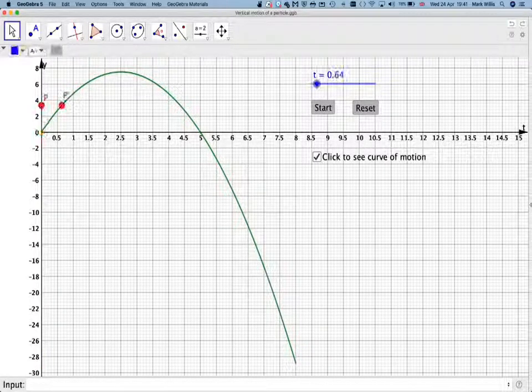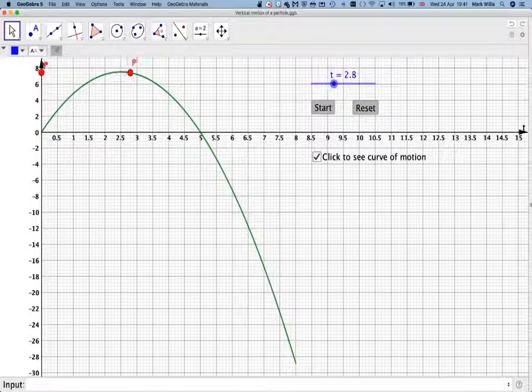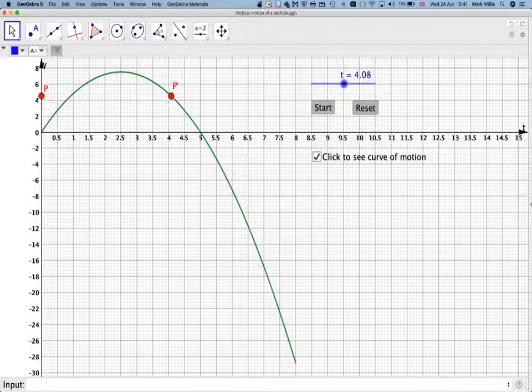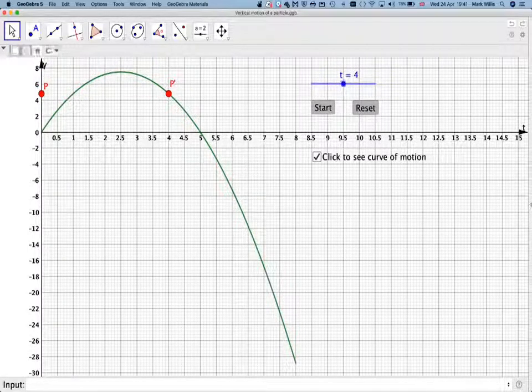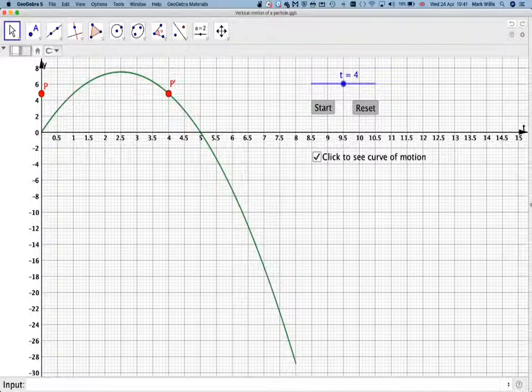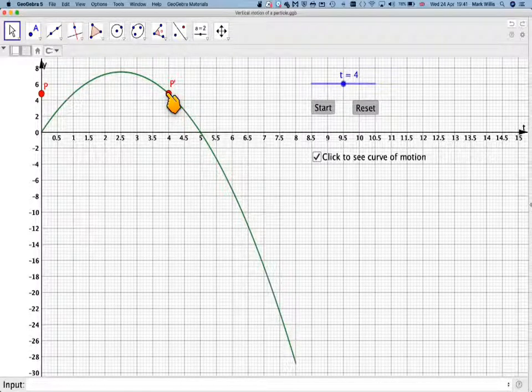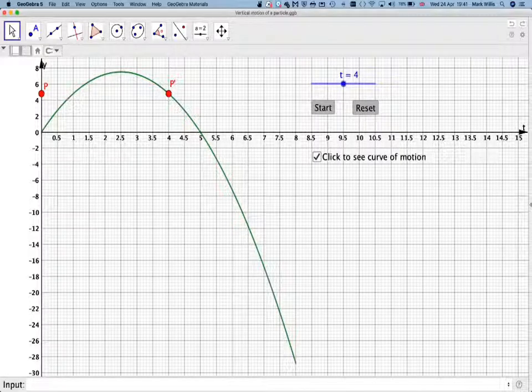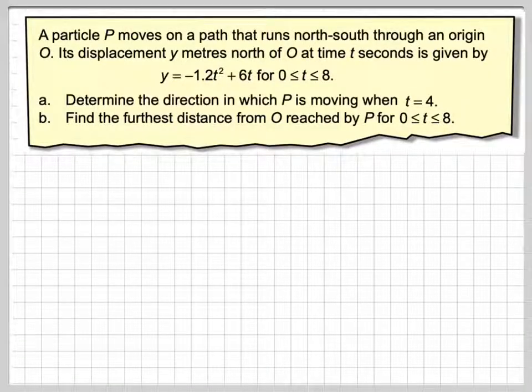So let's just have a look at it. When t = 4, which is there, we can definitely see that the particle is moving back downwards. But how can we show that using just algebra? So let's go back to the problem.